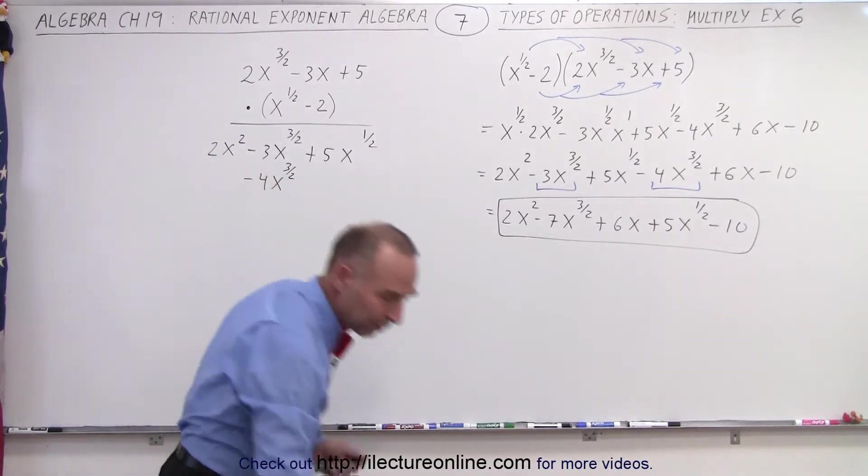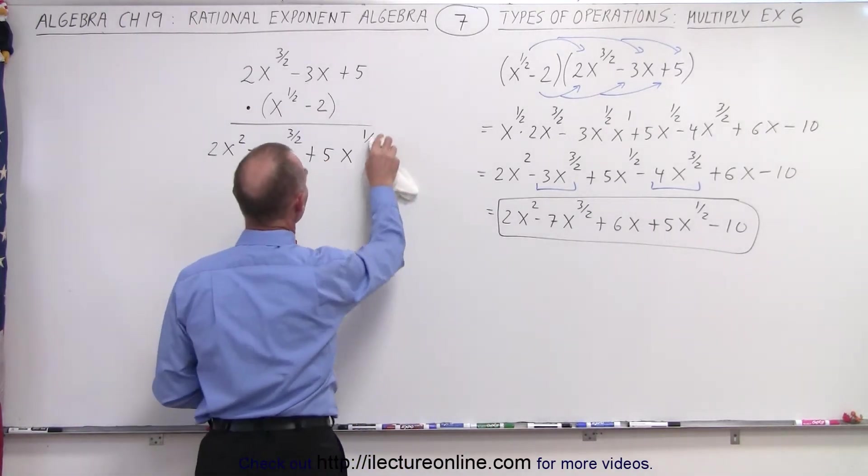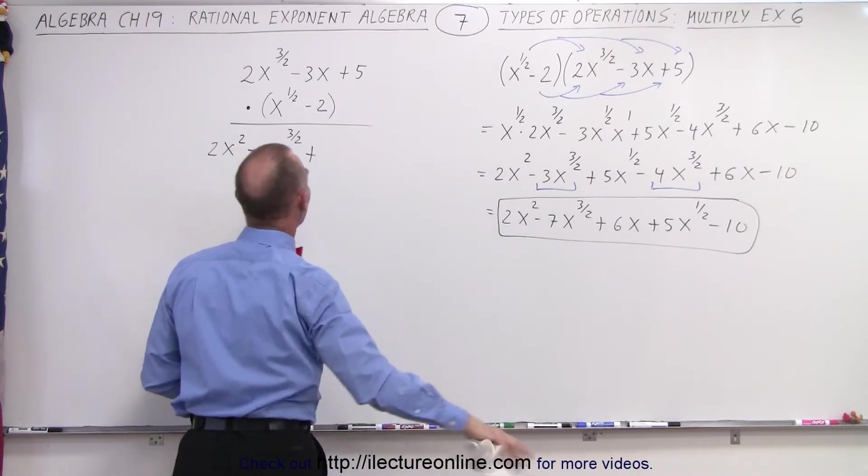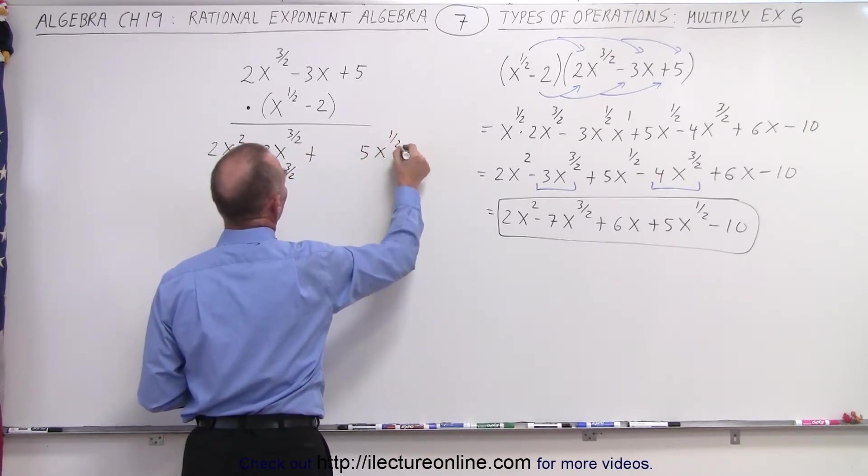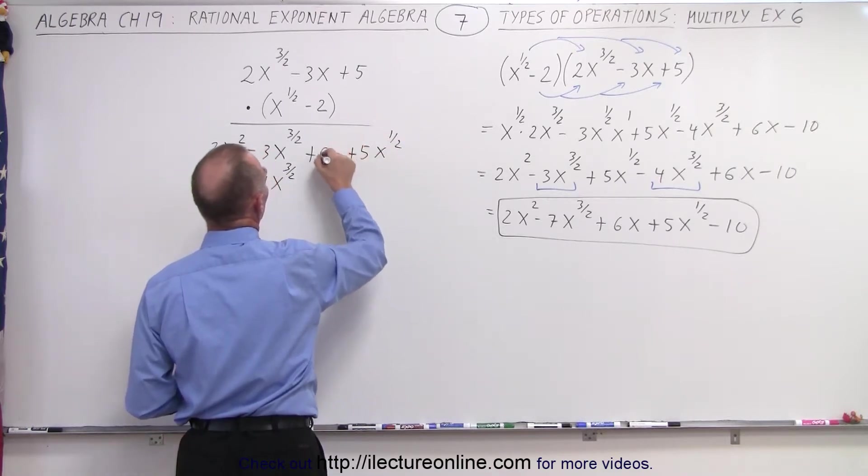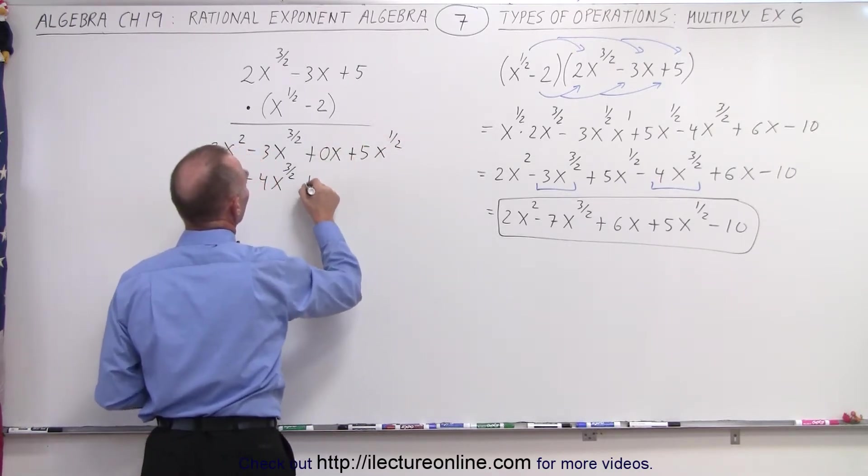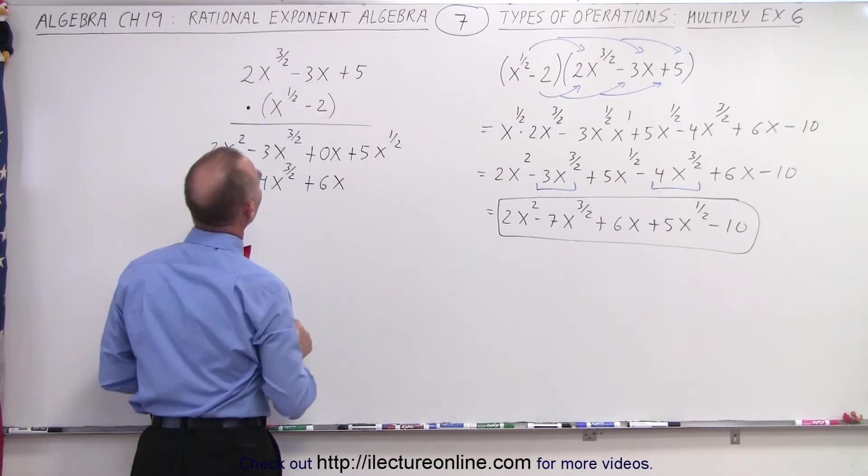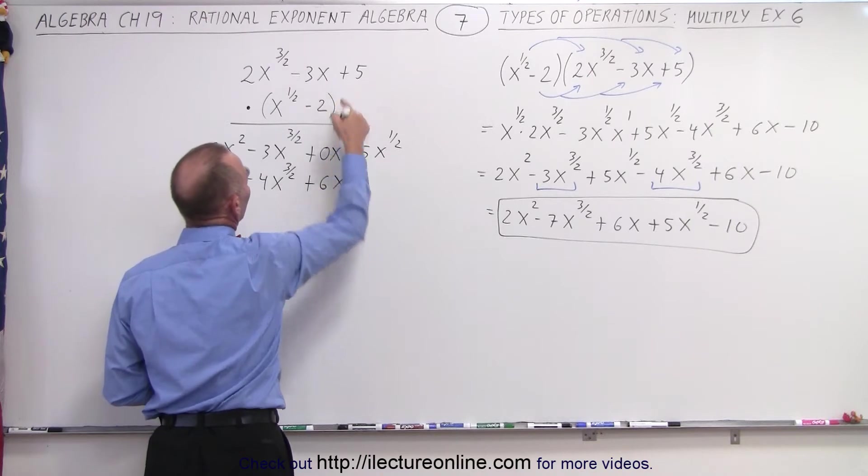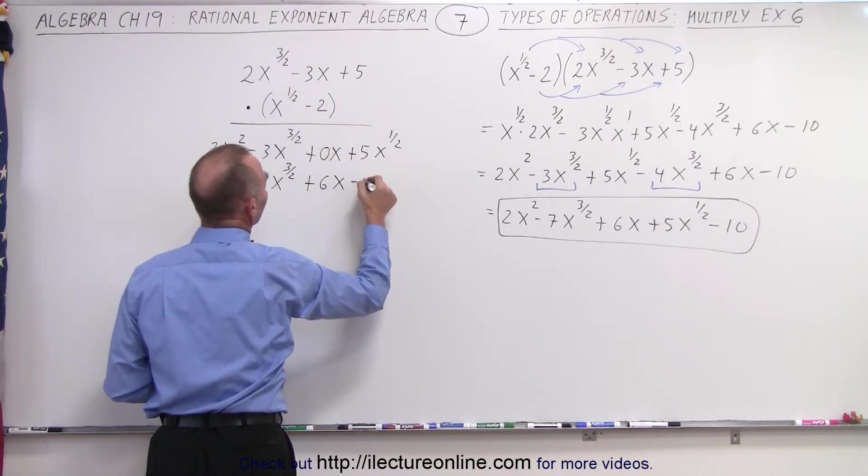I don't have any room for that, so I'm going to move this one out just a little bit. 5x to the 1 half, plus 5x to the 1 half, because we had 0x to the first power. So now I have minus 2 times the minus 3x. That gives us a plus 6x. And minus 2 times the minus 5 is a minus 10.